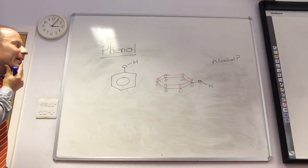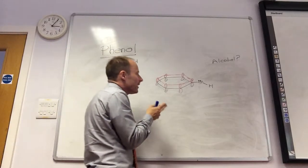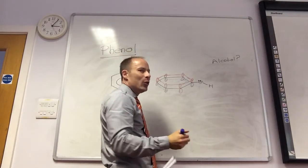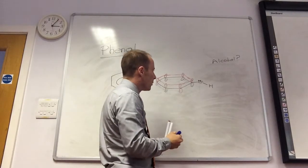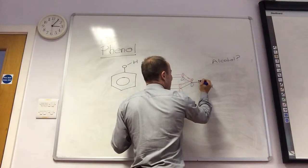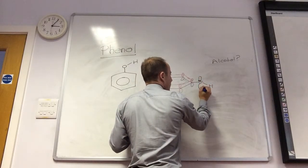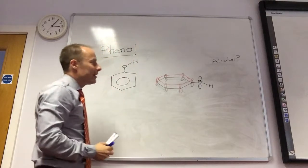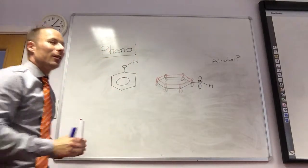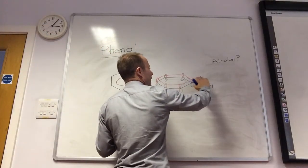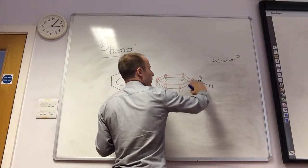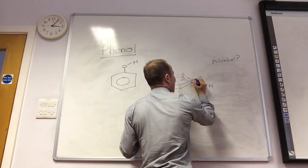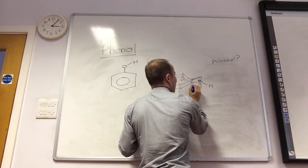What's oxygen got on here? Two lone pairs. Two lone pairs, yeah. They are in P orbitals. So, that oxygen has got a P orbital that looks like that, which has got a lone pair on it. So, what can that lone pair do with these guys here? They can overlap.